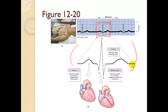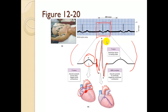The P wave represents atrial depolarization — the atria contracting. That wave spreads across and hits the AV node. Then we get the QRS complex, which is ventricular depolarization — the actual ventricles contracting. The T wave at the end isn't a contraction; it's the muscle cells resetting themselves so the whole cycle can repeat.